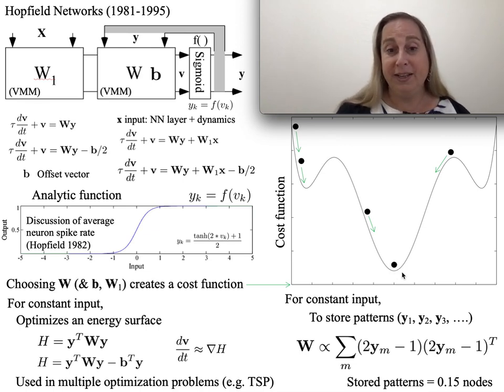There's a straightforward rule to set up these attractors—attractors meaning where is the bottom of the energy surface. This is a classic rule for setting up the weights, and it turns out that as long as the number of patterns you want to store is about 0.15 times the number of nodes, it works pretty well empirically.